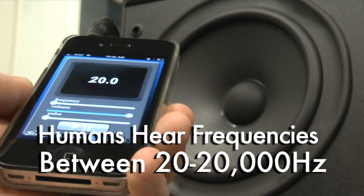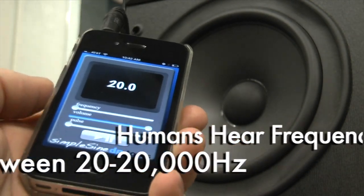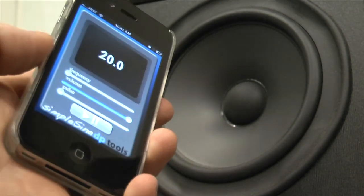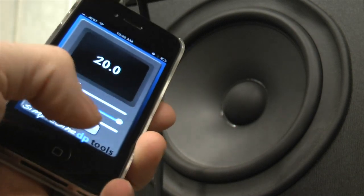One of the easiest things to visualize is a sine wave that oscillates at 20 Hz, 20 cycles per second.